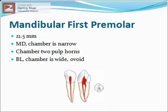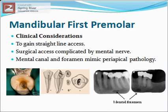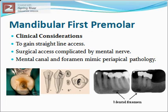Mandibular first premolar: the average length is about 21.5 mm. Mesiodistally the pulp chamber is narrow and has two pulp horns; buccolingually the pulp chamber is wide and ovoid. The mandibular first premolar has one root and one canal, but a second canal is still possible. Mesiodistally the canal is narrower than buccolingually. Lateral canals are present in 44 percent of cases. Clinical consideration: the access cavity of the mandibular first premolar extends onto the cusp tip in order to gain straight-line access. Surgical access to the apex is often complicated by the proximity of the mental nerve, due to the close proximity of the root apex to the mental canal and foramen. The mental canal and foramen may mimic the radiographic appearance of radicular pathology.